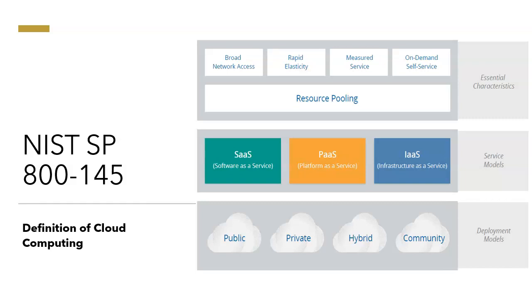This document also provides information on the ways cloud can be deployed. As per the NIST document, the cloud can be deployed in four different ways: public cloud, private cloud, community cloud, or hybrid cloud.